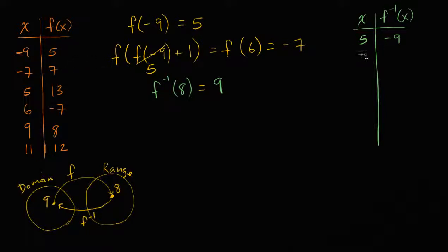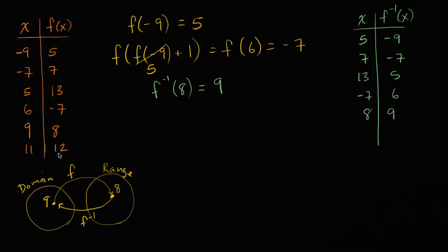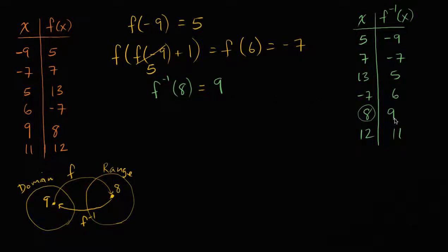So f inverse of x is going to map from seven to negative seven. Instead of going from this thing to that thing, we're now going to map from that thing to that thing. So f inverse is going to map from 13 to five, from negative seven to six, from eight to nine, and from 12 to 11. So all I did is I just swapped these columns — f inverse maps from this column to that column. And you see it right over here: f inverse of eight — if you input eight into f inverse, you get nine.